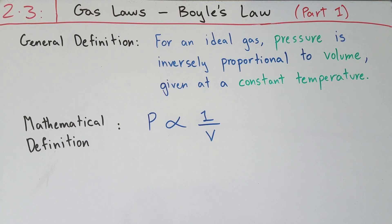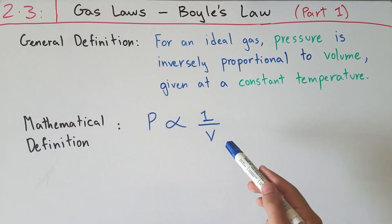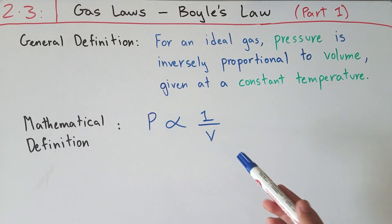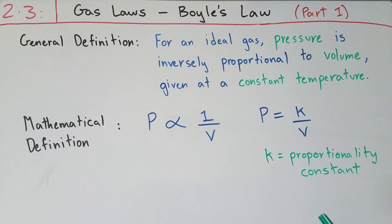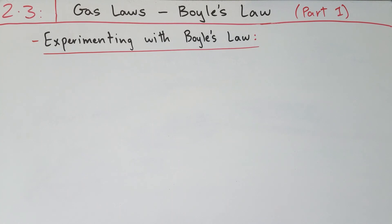In a mathematical definition, we could say that pressure is proportional to 1 over volume, or pressure is inversely proportional to volume. You can rewrite this as an equation where pressure equals k over volume. The k replaces the proportionality symbol and is the proportionality constant. Another way to write P = k/V is as PV = k, or pressure times volume equals the proportionality constant k.